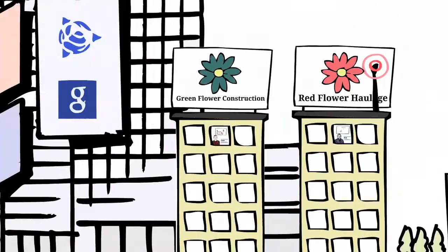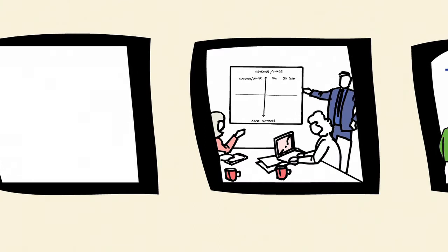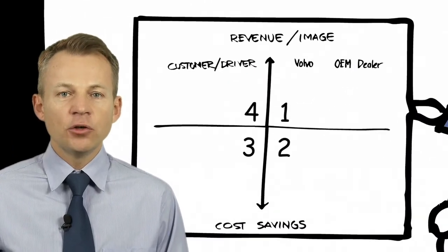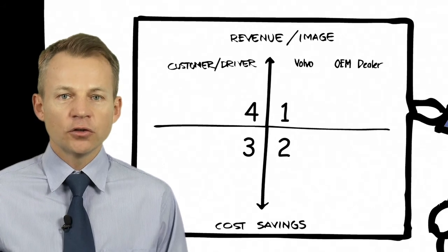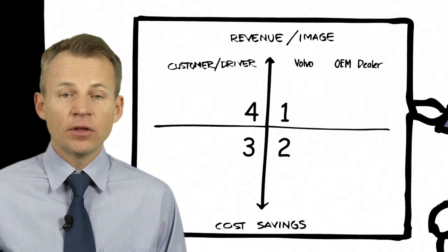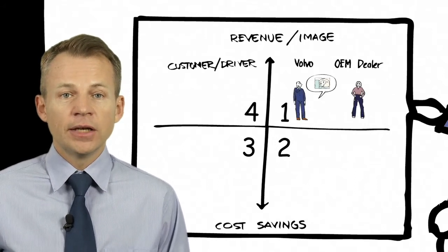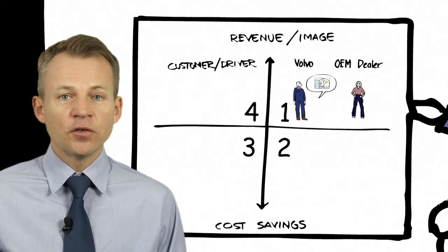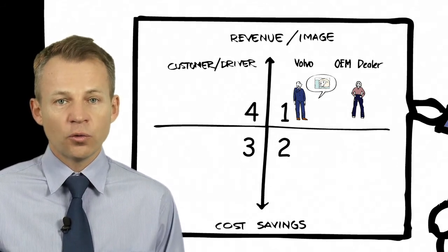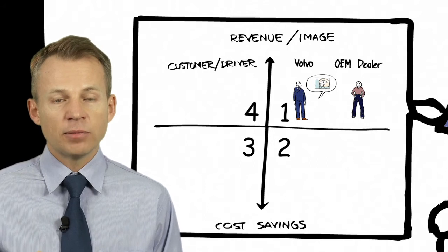We can use the connected Quadrant model to summarize these examples. Let me first explain the model. Revenue is going up. Cost is going down. On one side we have the OEM dealer and on the other side we have the customer driver. In Quadrant 1, service planning with Pam and Tom, increased revenue through proactive customer management.